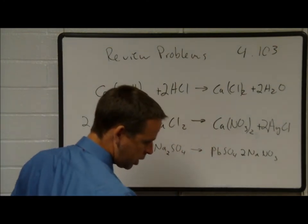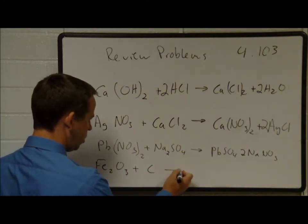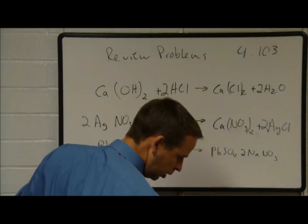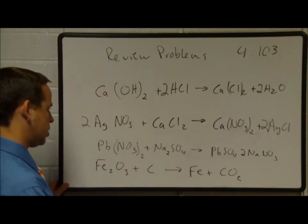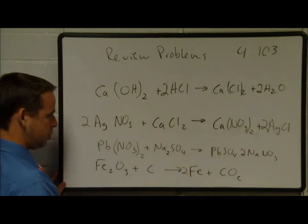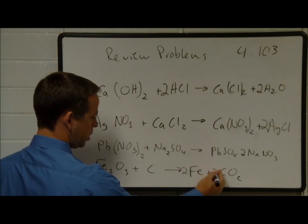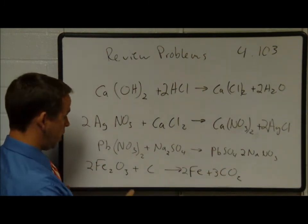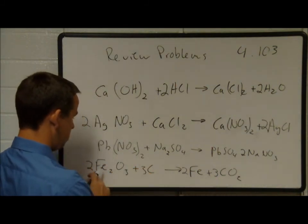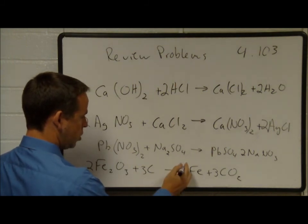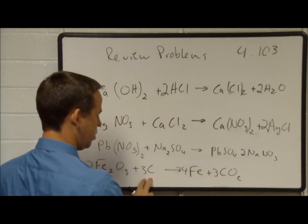Problem 4.103D: iron 3 oxide and carbon. Fe2O3 plus carbon reacts to form iron and carbon dioxide. We have 2 irons, so start with 2 irons. There are 3 oxygens here and 2 oxygens in CO2, so we put a 3 in front of CO2 and a 2 in front of Fe2O3. That gives 6 oxygens on each side, 3 carbons on each side, and 4 irons on each side — balanced.